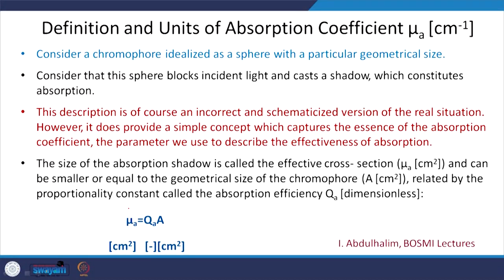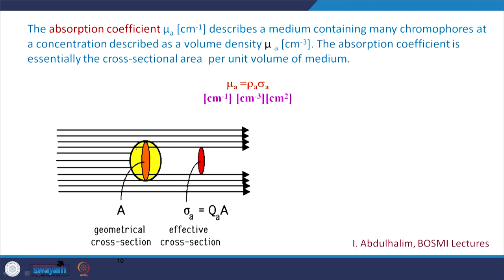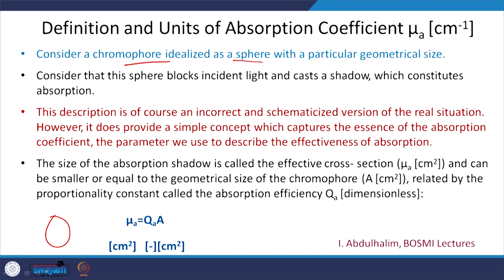Let us see what the absorption coefficient is. Consider a chromophore which is like a sphere. This sphere blocks incident light and casts a shadow. This description is not fully correct, but it is a schematic version that provides a simple concept capturing the essence of the absorption coefficient. The parameter we want describes the effectiveness of absorption. The shadow cast is called the effective absorption cross-section.